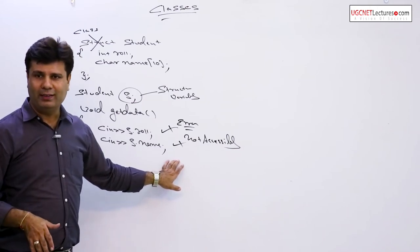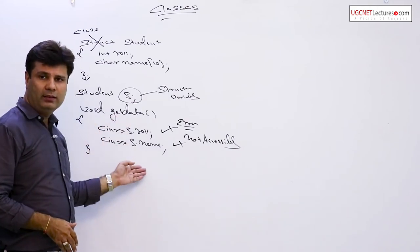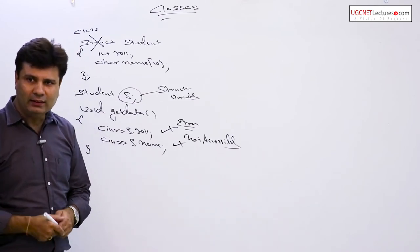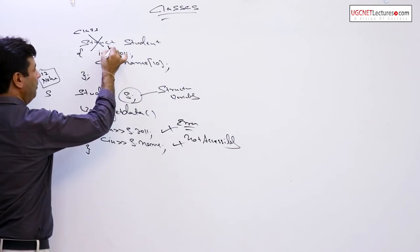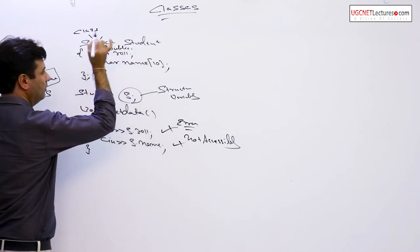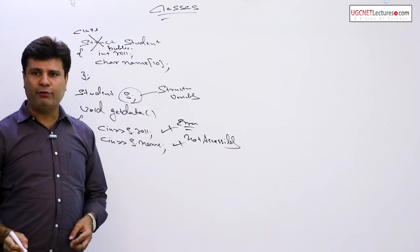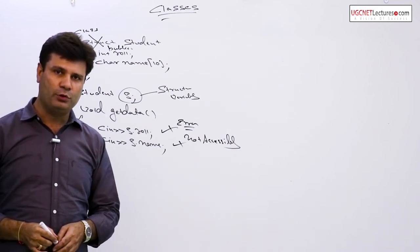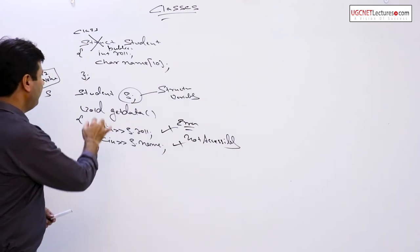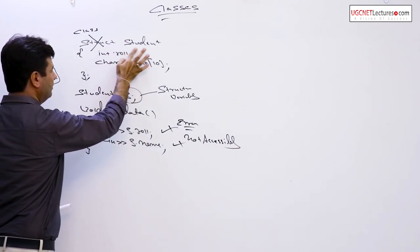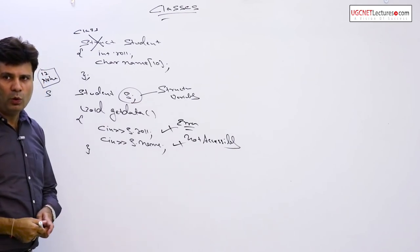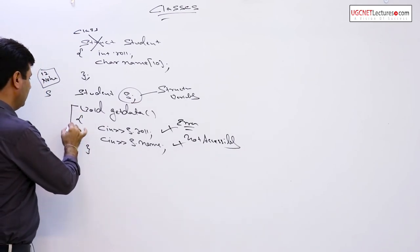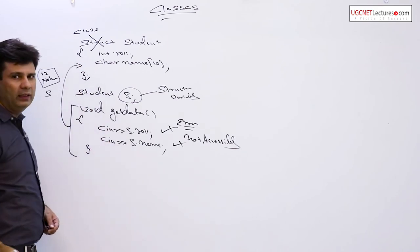Now the question arises, how can we access it within a function? I have only two ways to access it. Either I make it public, but if I define it publicly within a class, then there is no use of classes, no use of data hiding. So instead of defining it publicly within a class, what will I do? I will define the entire function, complete function within a class.